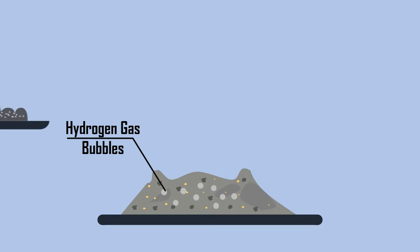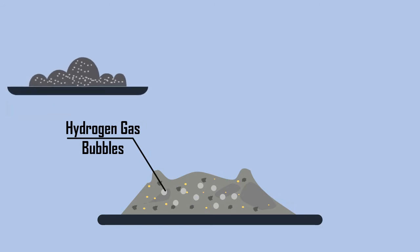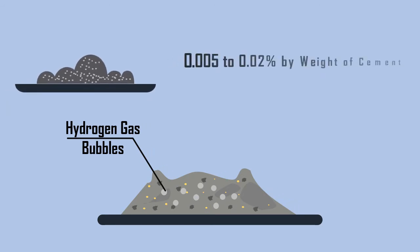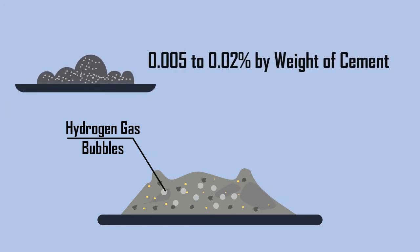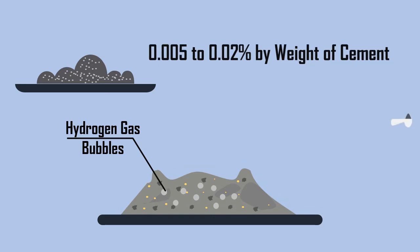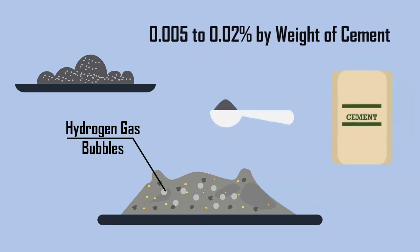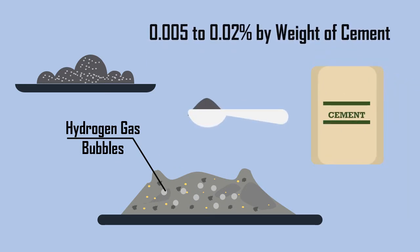The amount of this agent usually added varies from 0.005 to 0.02% by weight of cement — that is, approximately 1 teaspoonful of powder per bag of cement.